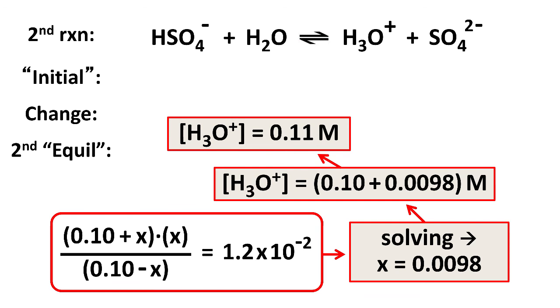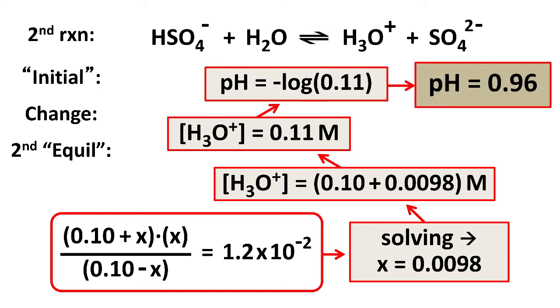So we get a little bit more hydronium concentration from the second dissociation. And then take the negative log of that to get the pH, and we get 0.96,